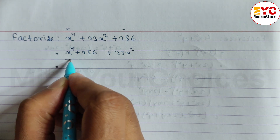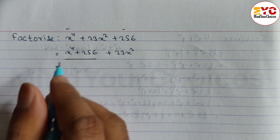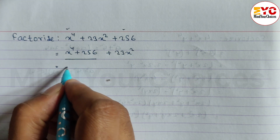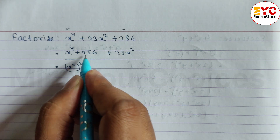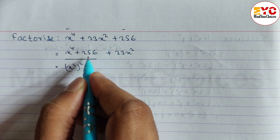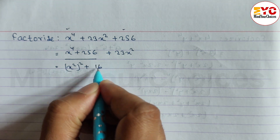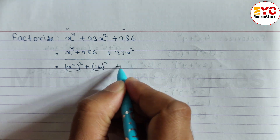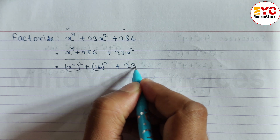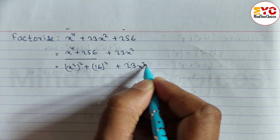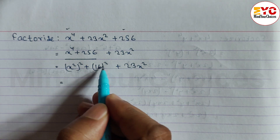We have to convert this into the form a² + b². Here we can write (x²)² + (16)², since 256 is 16 squared. Then we write the same 23x² term alongside.